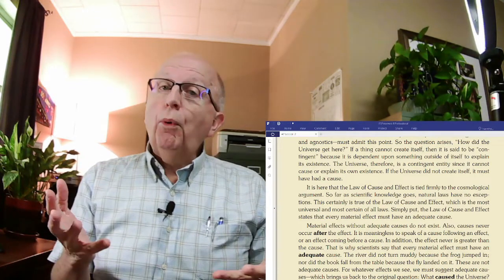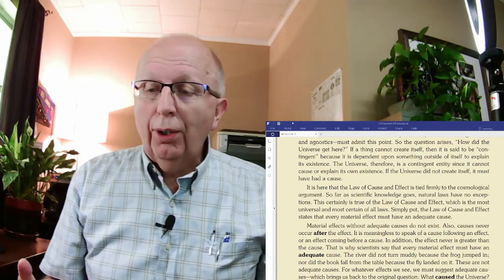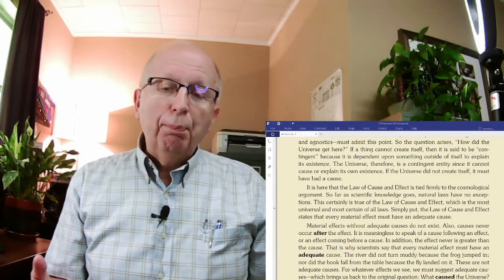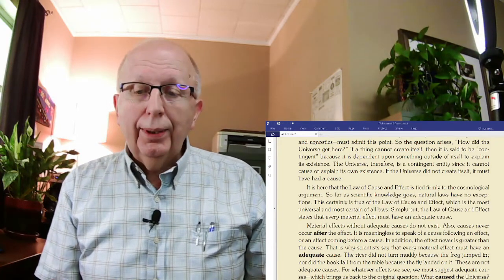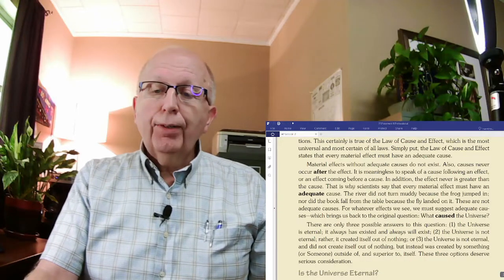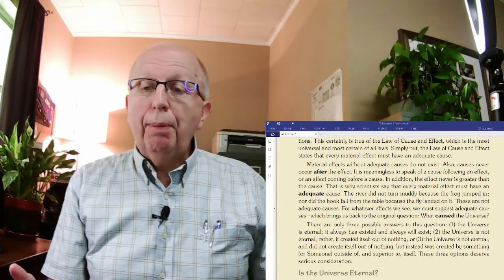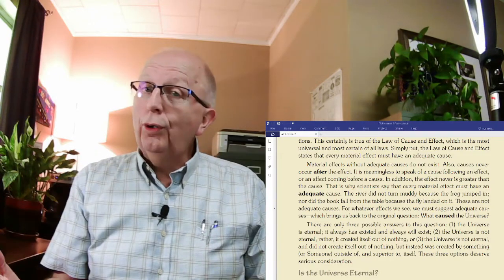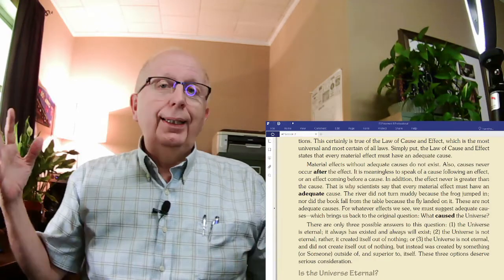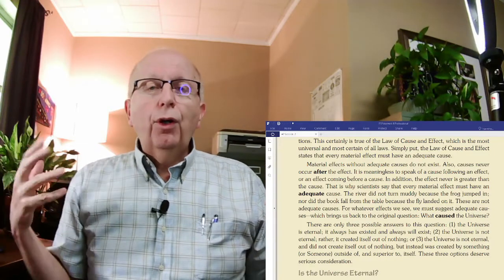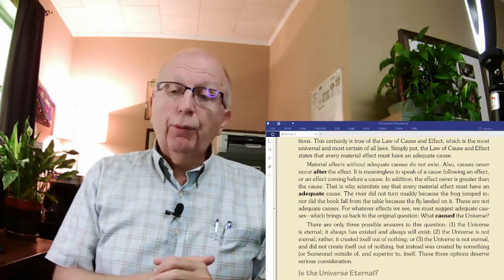Now, material effects without adequate causes do not exist. Also, causes never occur after the effect. It is meaningless to speak of a cause following an effect or an effect coming before a cause. In other words, something has to make something happen. And whatever causes the something to happen, the cause always comes first and then the effect. That is why scientists say that every material effect must have an adequate cause. Now, that's an important distinction. An adequate cause. The river did not turn muddy because the frog jumped in. Nor did the book fall from the table because the fly landed on it. These are not adequate causes.